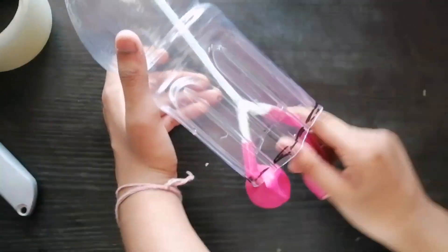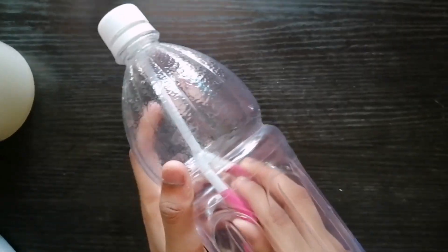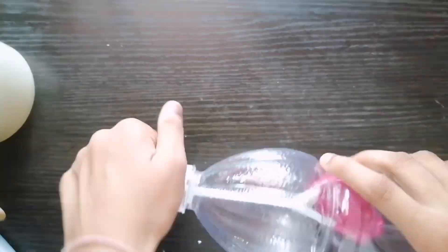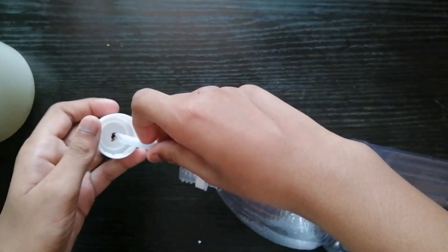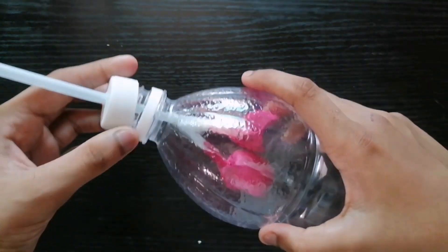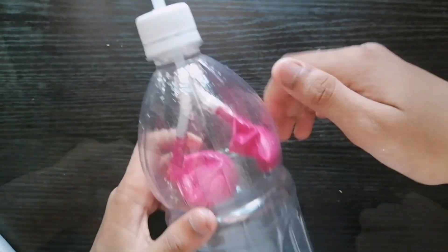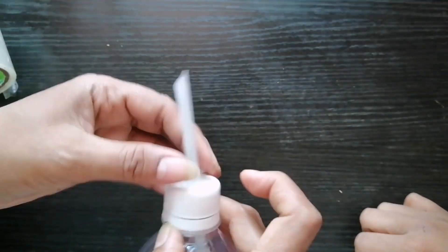Now insert the straw from the bottom of the bottle and take out the end through the cap. Secure it with cello tape or hot glue.